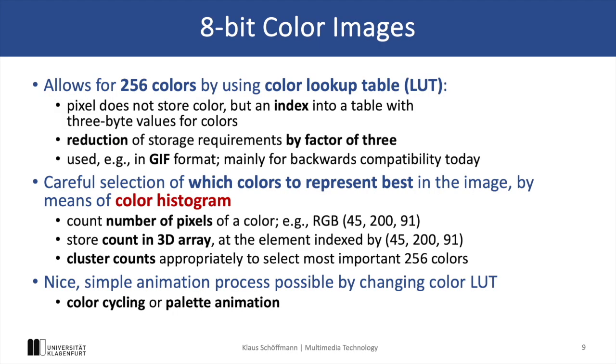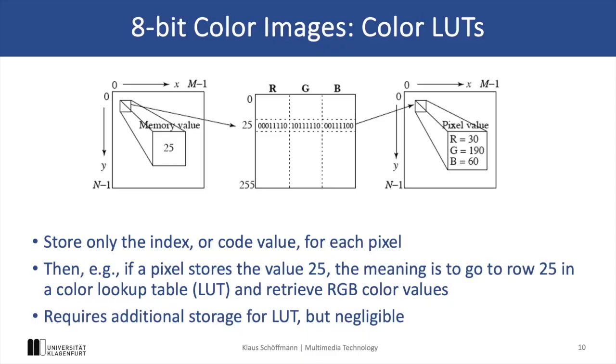It is also possible to store color images with only 8 bits per pixel. This is typically done with a color lookup table, where each pixel simply saves an index into this table, and the table can be different for each image. That means we select the most important colors for every image and still get a very good representation of the color, even though we only need 8 bits per pixel — so the storage requirements would be similar to a grayscale image, but we also have to save the color table.